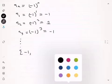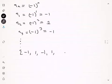This sequence can be written as: the first term is negative 1, the second term is 1, then negative 1, then 1, and so on. So A sub n equals negative 1 raised to the n power.